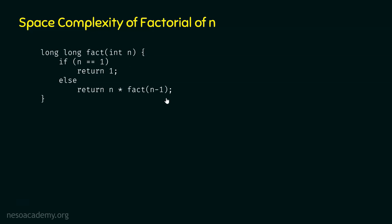This function is written in C. Now let's convert it to its equivalent algorithm, since we want to analyze space complexity rather than worry about implementation details. The algorithm is written in a C-like syntax — 'algo fact(n)' — with the same base case 'if n equals 1, return 1' and recursive case 'else return n times fact of n minus 1'.